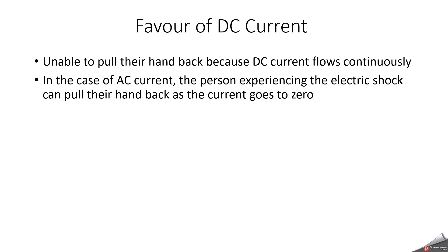Now we are going to discuss from different perspectives — in which perspective people say DC current is more dangerous, and in which perspective AC current might be more dangerous — so we can come to a conclusion. Before discussing, we need to understand the path of current through the body. For example, current passing from the right hand to the right leg can be painful, but when it passes from the right hand to the left hand through the heart, it may cause ventricular fibrillation, which is usually fatal. Time duration of the electric shock is also very important.